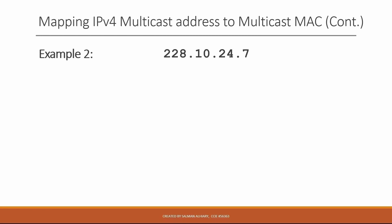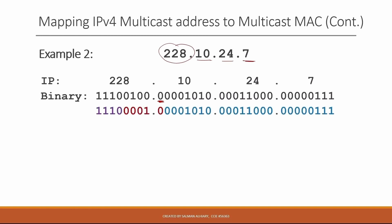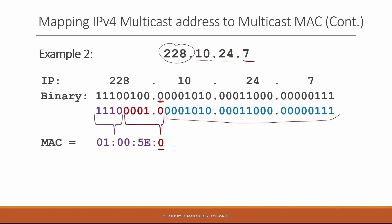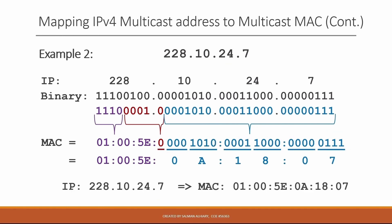Let's have another example: 228.10.24.7. First, convert the IP to binary. You only need to convert the second, third, and last octets to binary, because the first octet is always replaced with 01:00:5E, and the high bit of the second octet is always fixed to zero. We take the 23 bits, prepend 01:00:5E:0, then convert to hexadecimal. This gives us 0A, 18, 07. So 228.10.24.7 maps to MAC address 01:00:5E:0A:18:07.